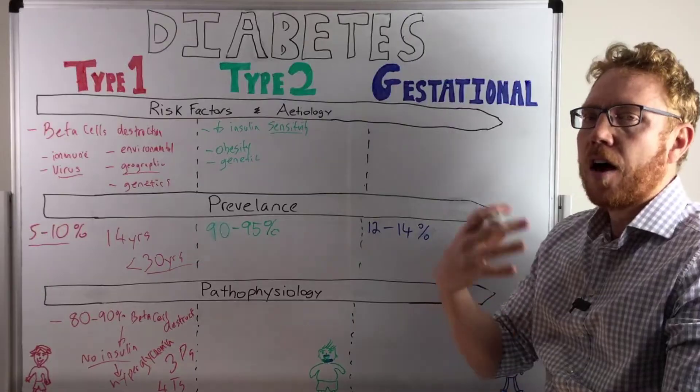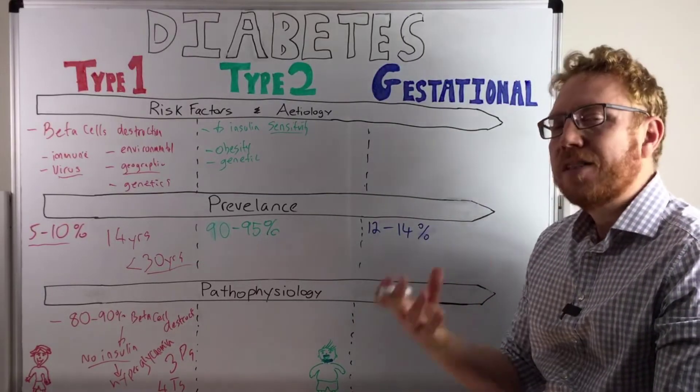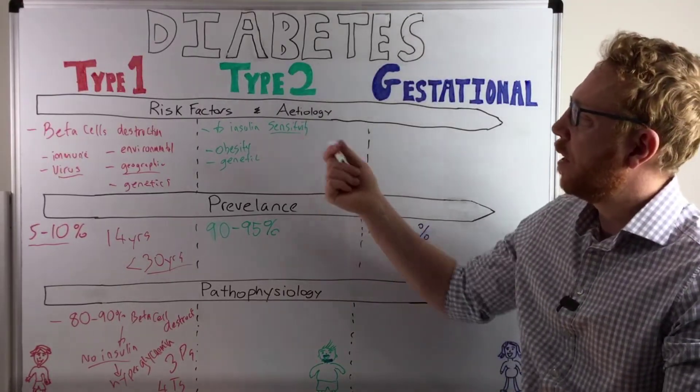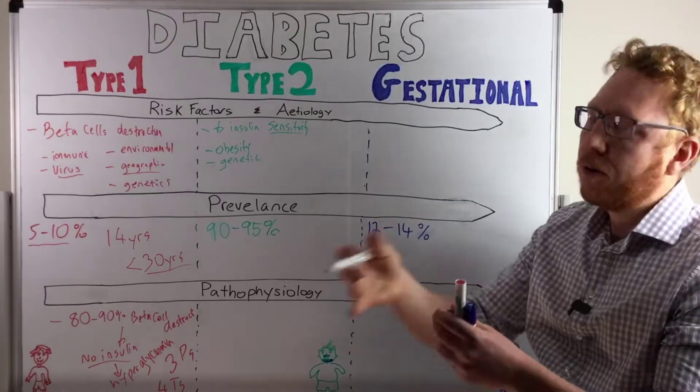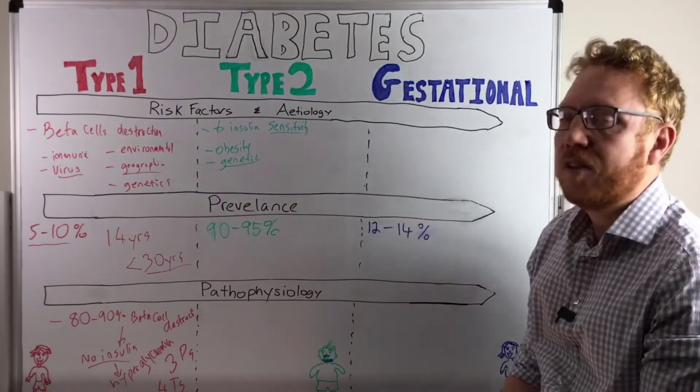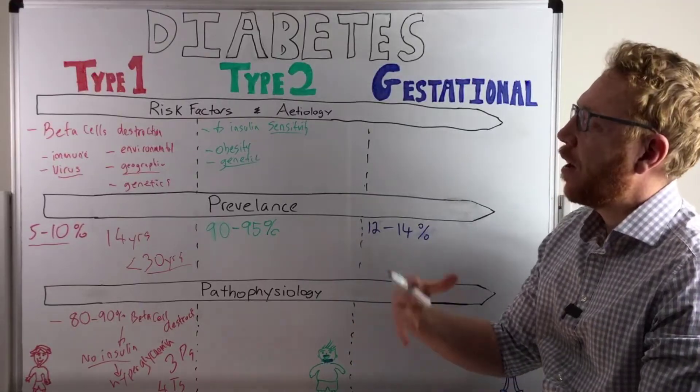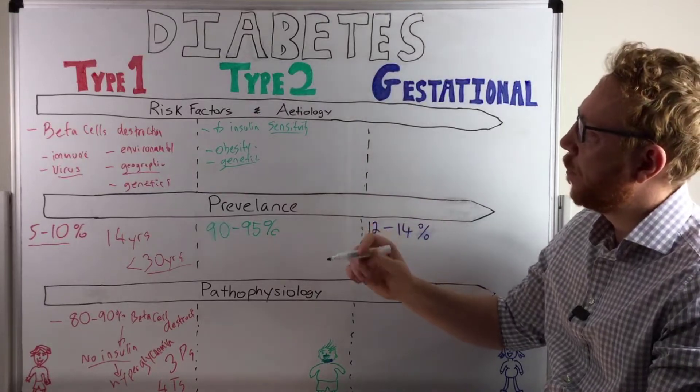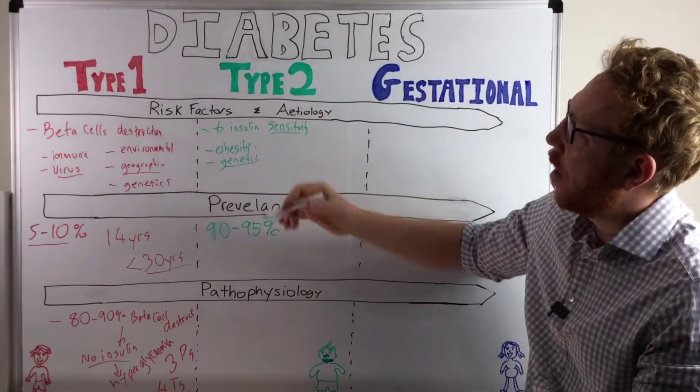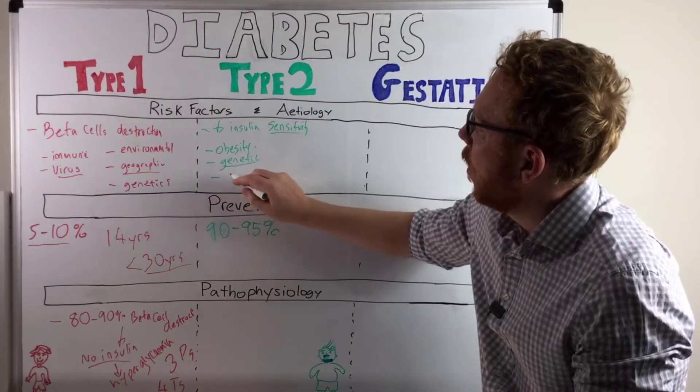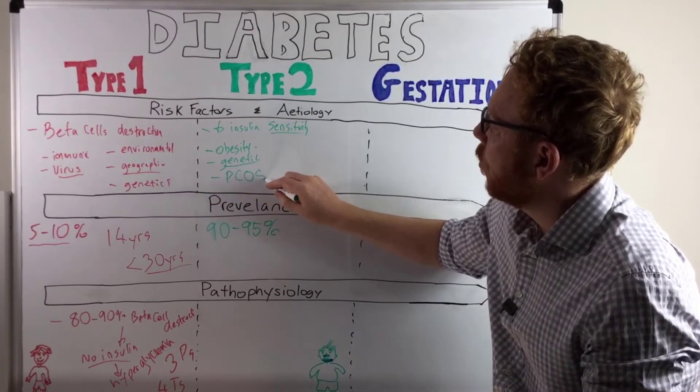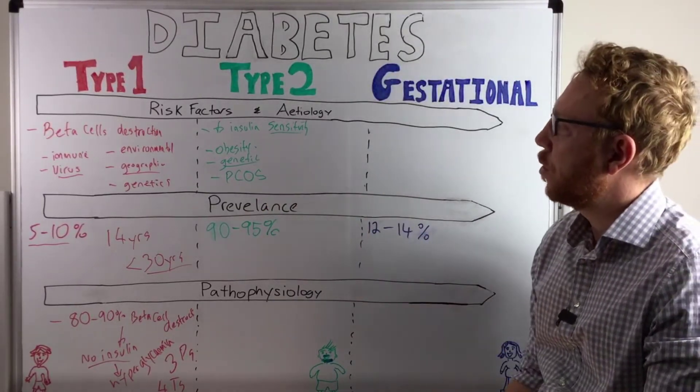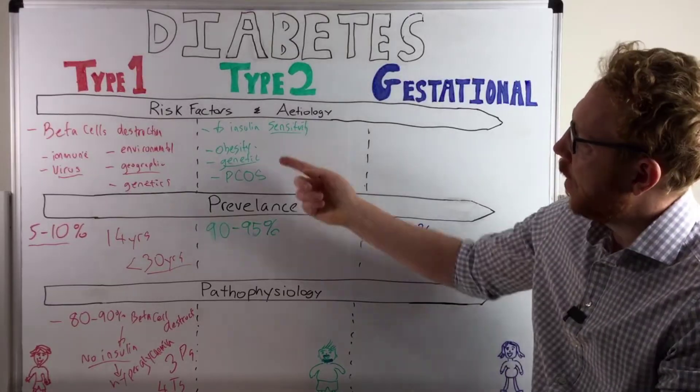Obesity seems to be the high amount of lipids within your tissue seems to be toxic to insulin receptors. Therefore the insulin receptors aren't responding to insulin, therefore the receptors don't open, glucose doesn't go in. Genetics seems to be a predisposition to a background of either obesity or also an effect to the insulin receptors.